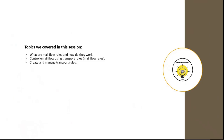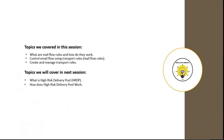In this session, we discussed what are mail flow rules and how we can control email routing using mail flow rules in Exchange Online. In the next session, I will be discussing what is the High Risk Delivery Pool or HRDP and how it works. If you learned something new from this video, please write in the comments and subscribe to the channel. Thank you for your time, take care.